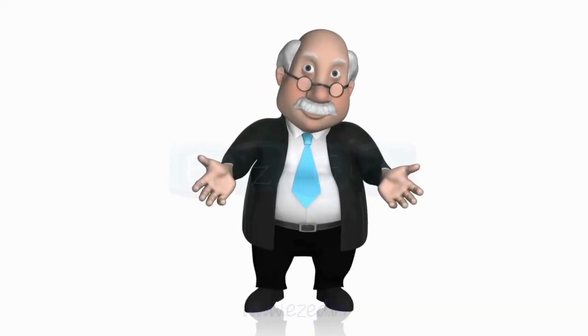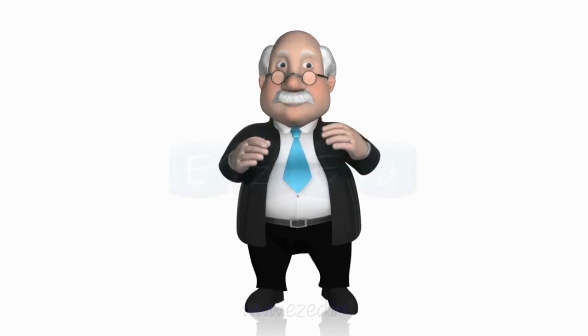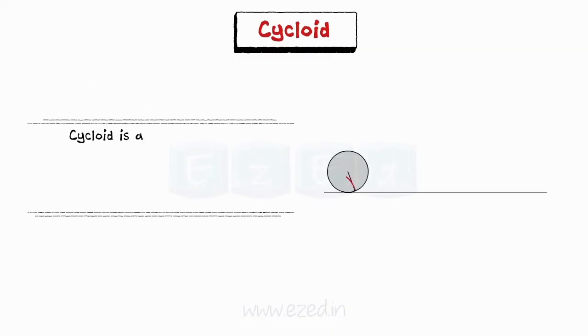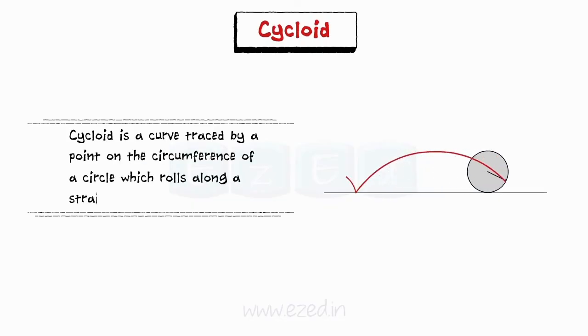Seriously, pay attention — this is important. Firstly, we will see what is a cycloid. A cycloid is a curve traced by a point on the circumference of a circle, which rolls along a straight line without slipping.